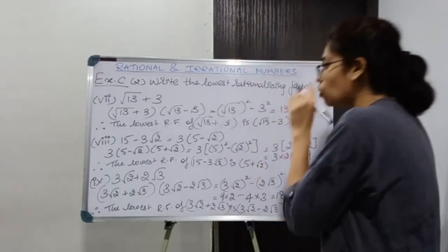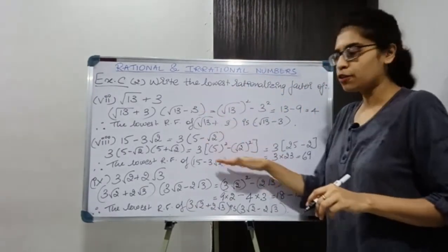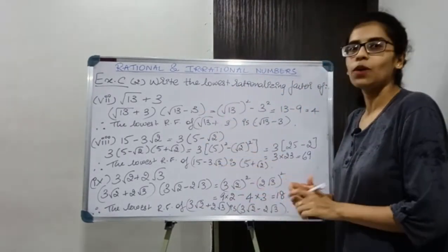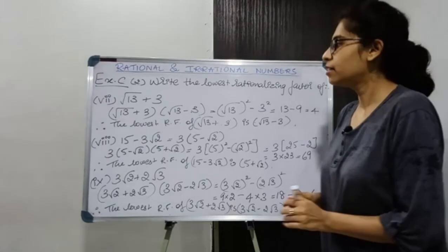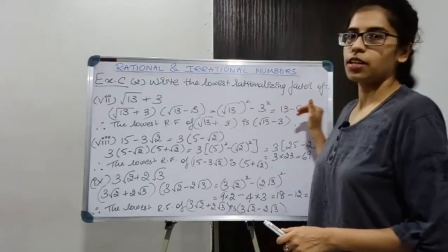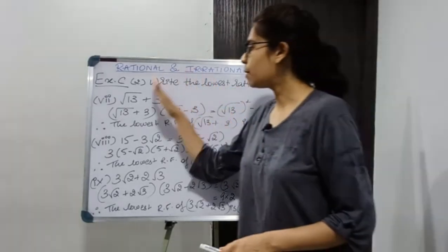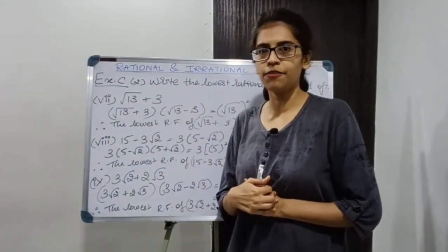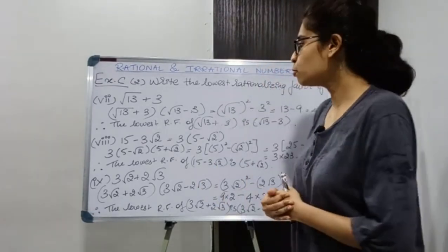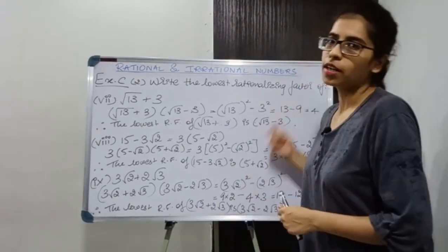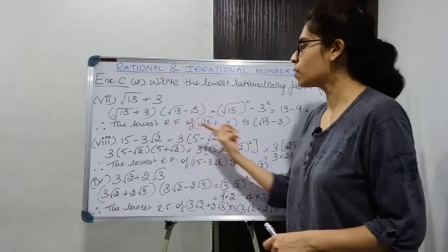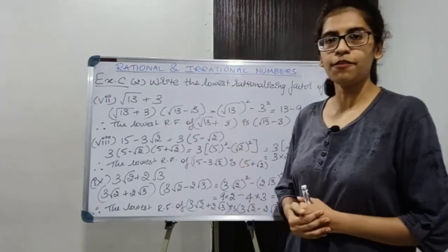I have shown the working of each and every sum to help you understand how you get a rational number by multiplying by the rationalizing factor. It would be better if you do the working and then state the lowest rationalizing factor.